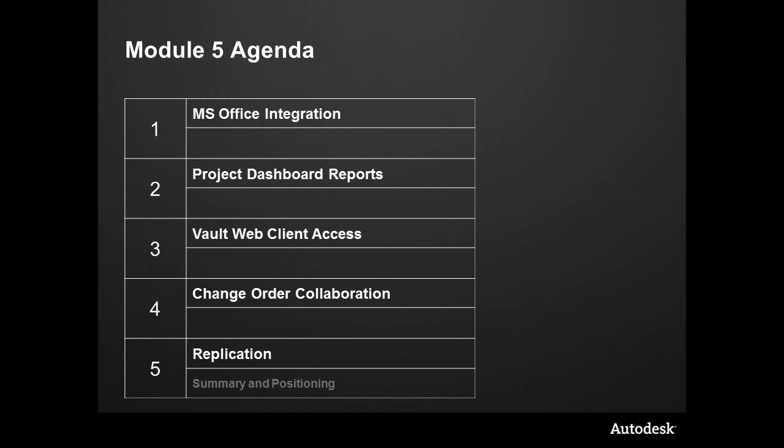Today's module is going to take us through some collaboration and some extension of Vault. Our three key themes are integration, collaboration, and flexibility — this one is going to address collaboration: extending Vault to other people, being the central source, communicating with all the members of the design team so we can look to one location and see all the up-to-date information.